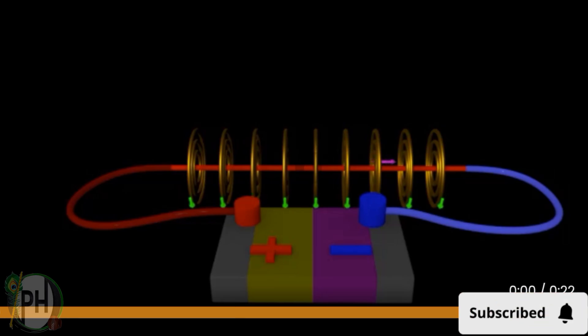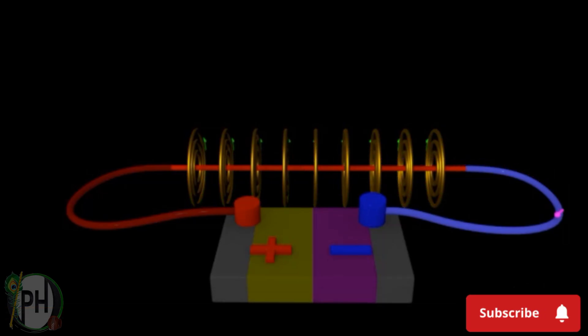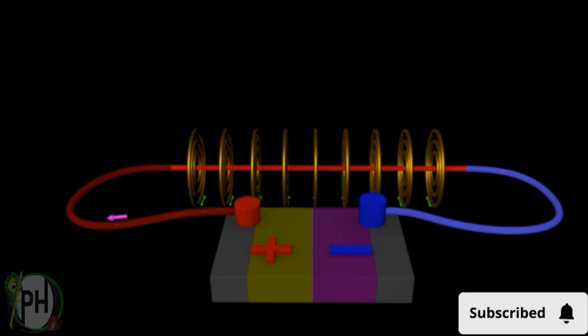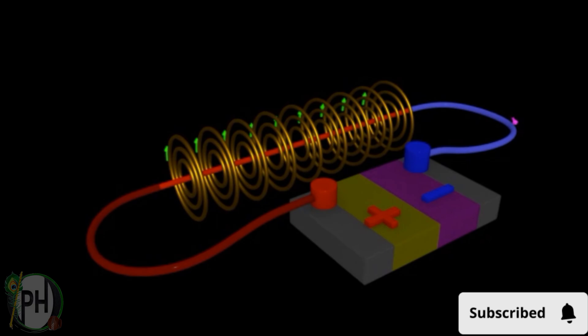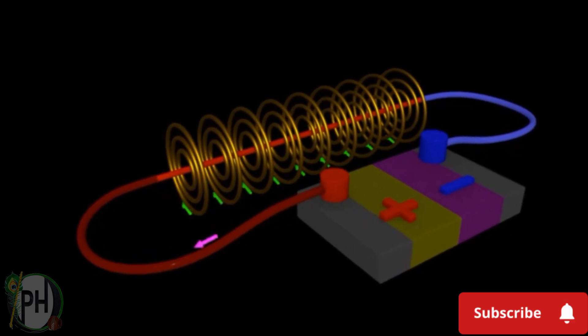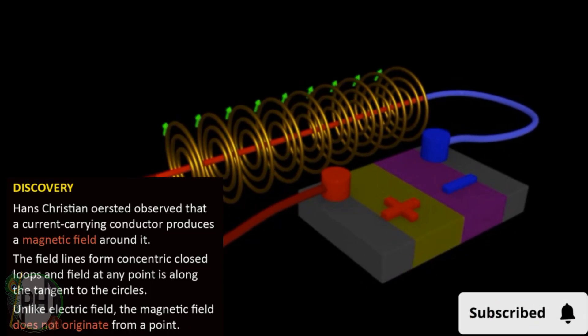Discovery. Hans Christian Ørsted observed that a current-carrying conductor produces a magnetic field around it. The field lines form concentric closed loops and field at any point is along the tangent to the circles.